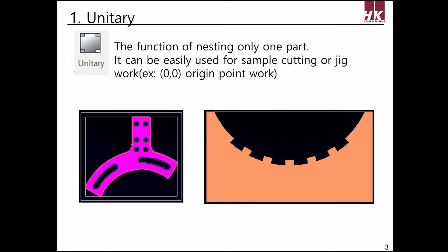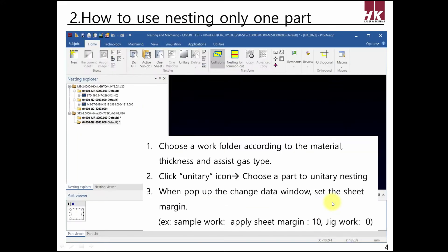Unitary nesting is nesting only a single part. This can be useful when working on origin 0,0, or when you need to nest a single part to cut one or two parts for sample. First, let's find out how to use unitary nesting.